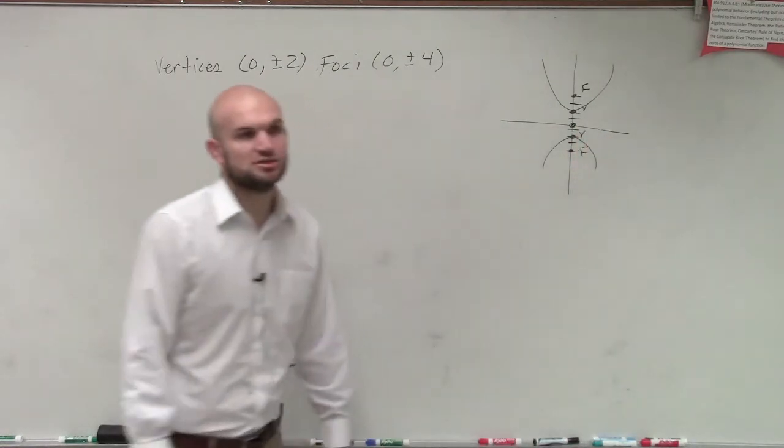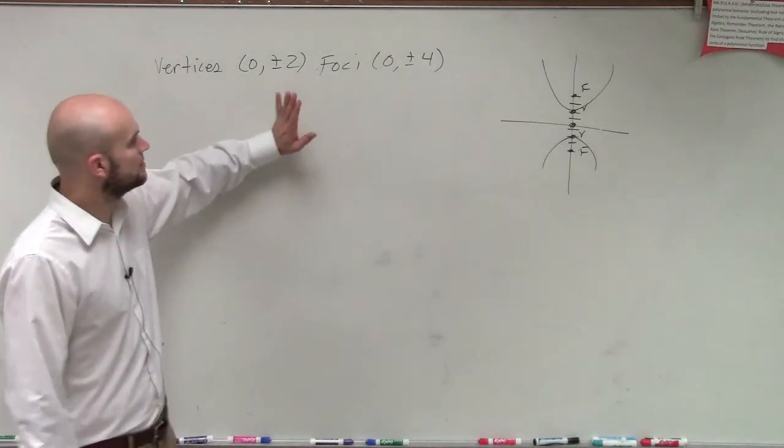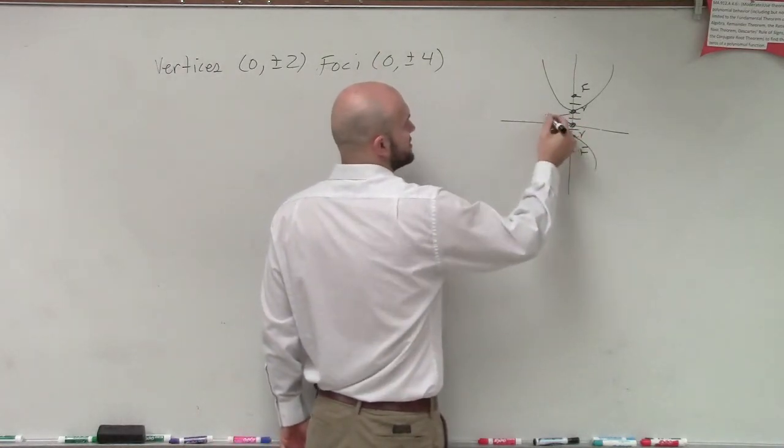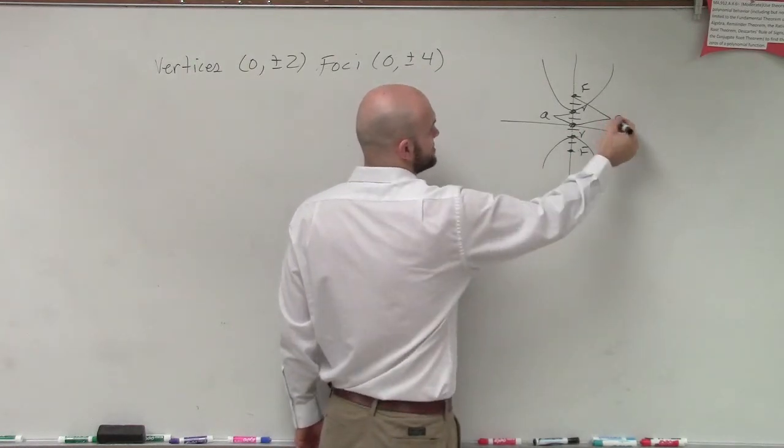So now they're asking us to write the standard form. Well, we know, remember, the distance between the center and your vertices is a, and the distance between the center and the foci is going to be c.